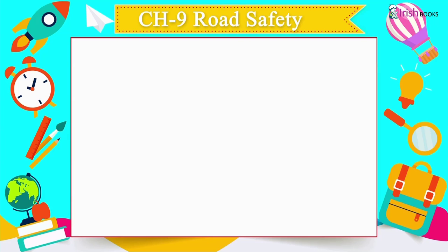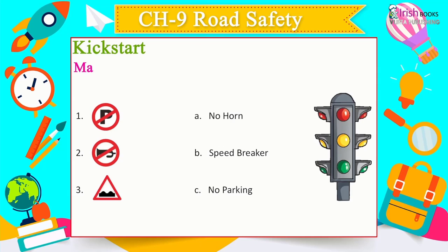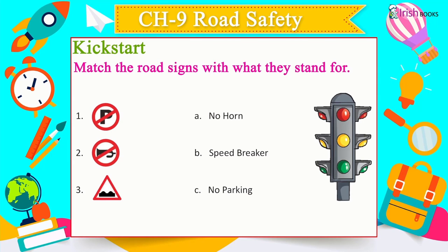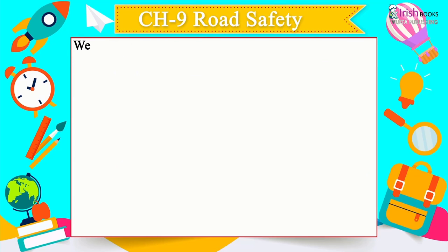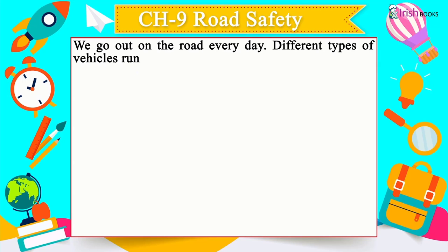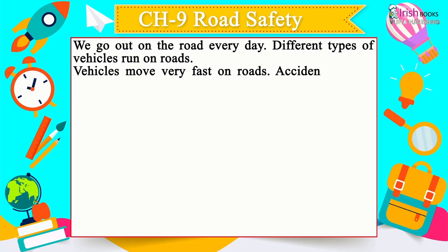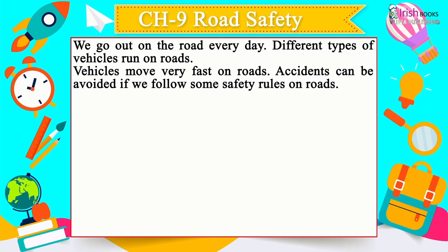Chapter 9: Road Safety. We go out on the road every day. Different types of vehicles run on roads and move very fast. Accidents can be avoided if we follow some safety rules. Road signs include: no horn, speed breaker and no parking.